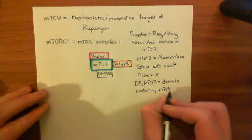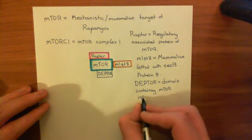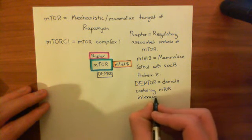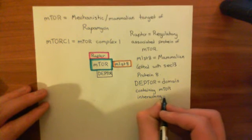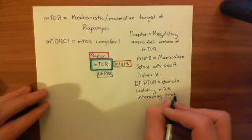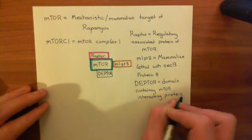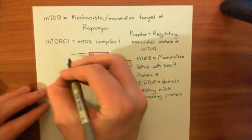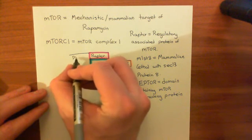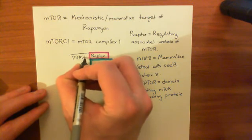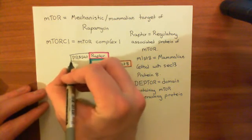There's one final protein which forms part of this mTOR complex 1, which is the protein PRAZ40. PRAZ40 binds to the protein RAPTOR, so we'll draw it over here — PRAZ40 bound off the RAPTOR protein.